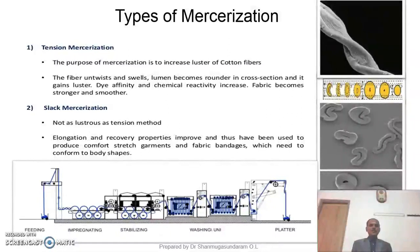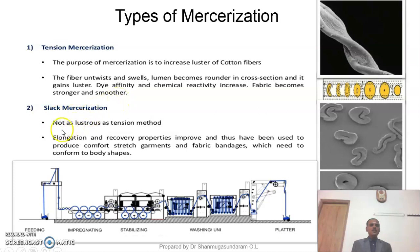Now we will discuss about the types of mercerization. Basically, there are two types: tensed mercerization and slack mercerization. In tensed mercerization, the purpose is to increase the luster of cotton fiber. The fiber untwists and swells, the lumen becomes rounder in cross-section, and it gains luster. Dye affinity and chemical reactivity increase, and the fabric becomes stronger and smoother. In slack mercerization, the luster is not as pronounced, but elongation and recovery property improves, making it useful for comfort stretch garments and fabric bandages that need to conform to the body shape.